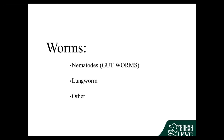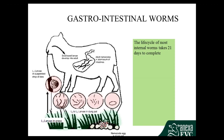Here's just a basic overview of the life cycle of your normal worm. Basically what happens is the adults live in the intestines or the guts of the animal. They produce eggs which they then pass out in the faeces of the animal onto the pasture.